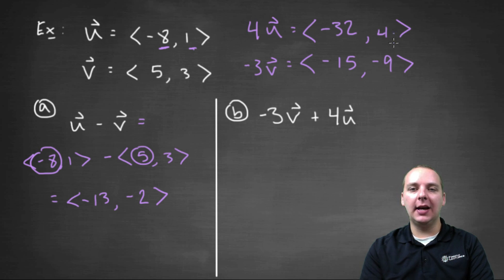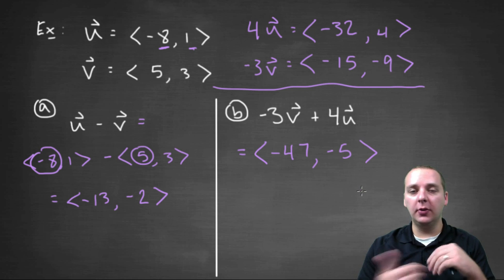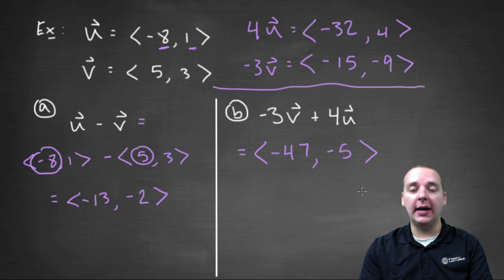So these are the guys we're adding, four u and negative three v. So this would be, let's just add the first components, we'd get negative forty seven I think that is, and then negative five. Okay, so you can do scalar multiplication and addition subtraction combined, and in fact we do see this for a lot of different examples.